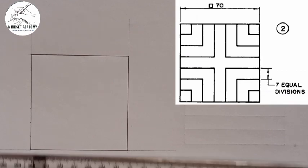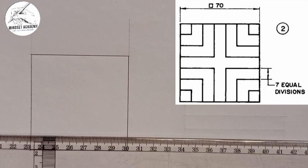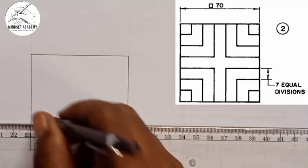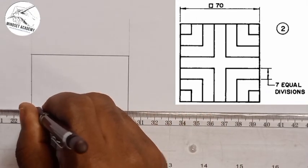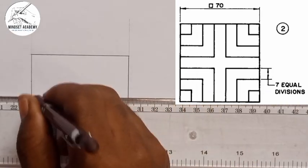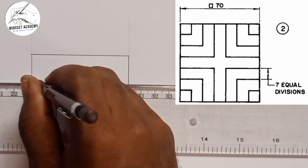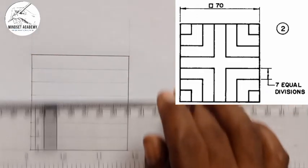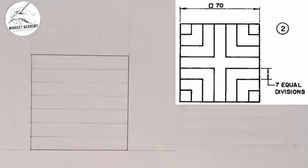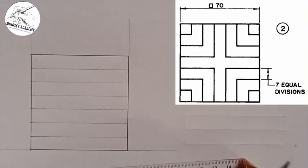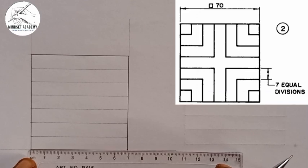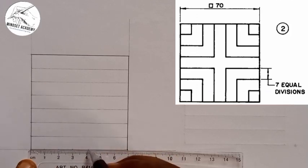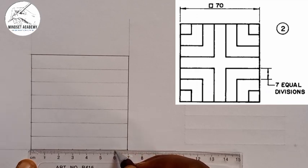I'll use my set square and T-square to connect those points, but I'll be using faint lines. From here to here should be a faint line, the next one too, the next one, and so on — each one is a faint line until we've done all six internal vertical divisions. Then I'll do the same horizontally: I'll place my meter rule this way, marking 10mm (1cm) increments — 0 to here is 1cm, another 1cm, another 1cm, repeating until we have all 7 divisions.